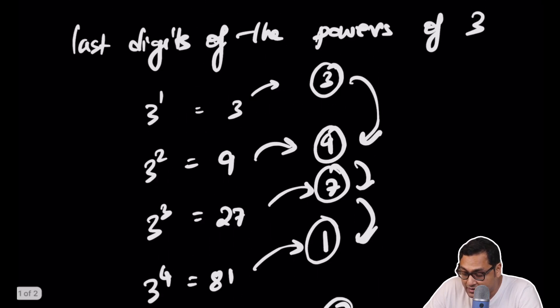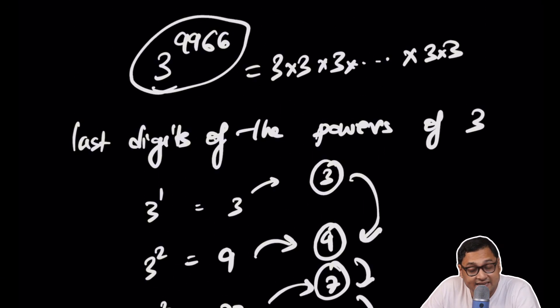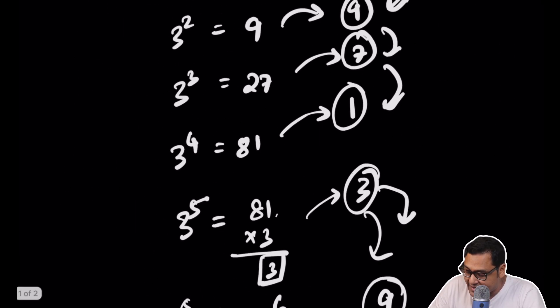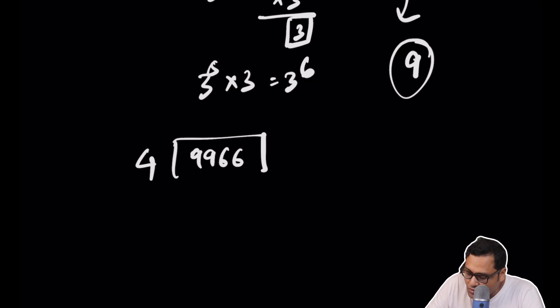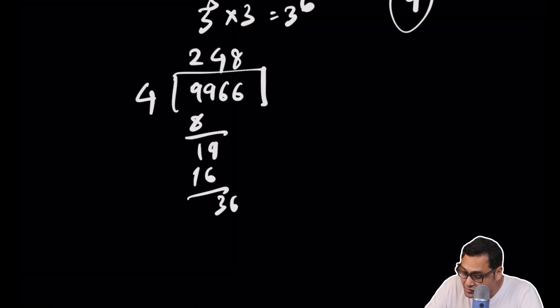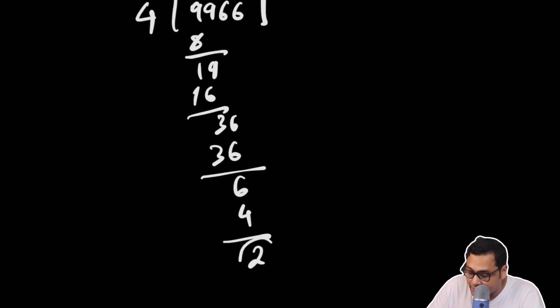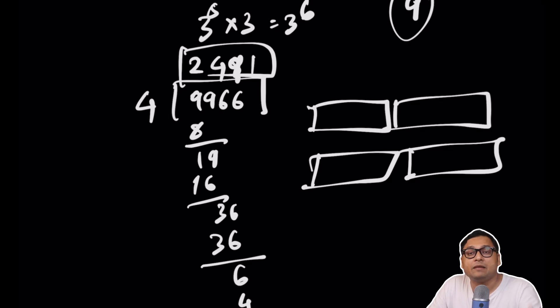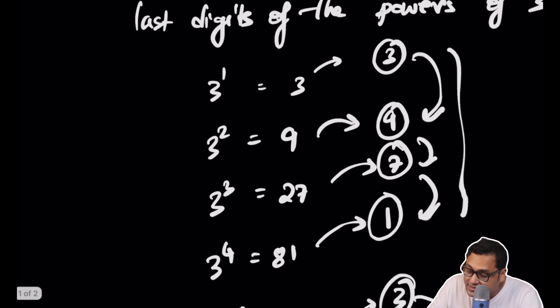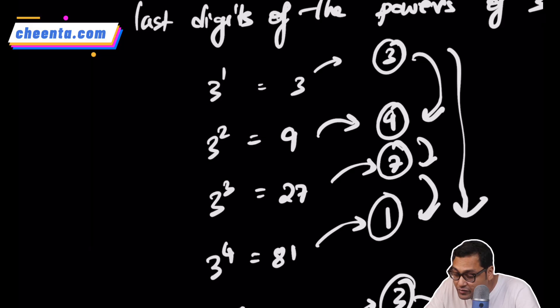The question is what will happen at three to the power 9966. We just need to see how many times this group of four appears. So take the power 9966 and divide it by 4, because the pattern repeats in groups of 4. Performing the division: 4 goes into 9966 giving 2491 with a remainder of 2. So the group of 4 repeats 2491 times, and then it goes 2 more steps into the cycle. Two steps into the cycle 3, 9, 7, 1 gives us 3 then 9 — so the last digit is 9.